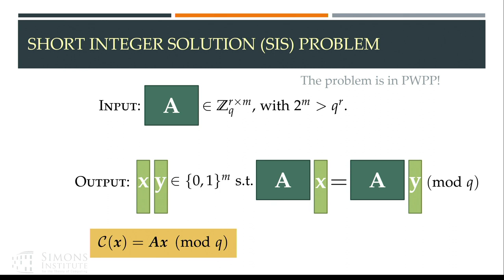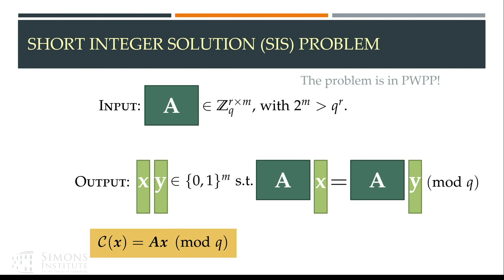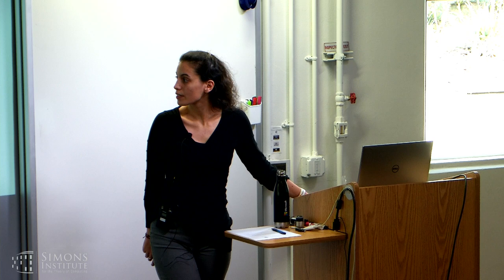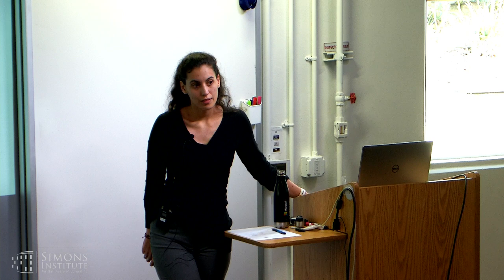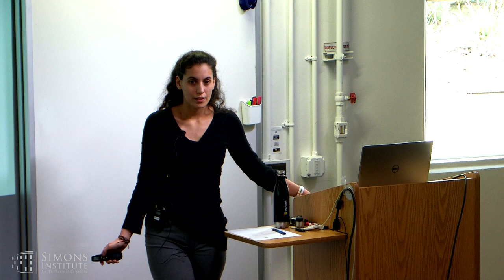Now our result: constrained SIS is weak PPP complete. The weak PPP result implies a similar result for PPP. Regarding the difference from Minkowski: if you take M large enough, the Minkowski bound for the kernel mod q of A would be one, so it seems related. But the key distinction is PWPP, which we don't get from Minkowski, and constrained SIS is also a first step toward defining the complete problem.